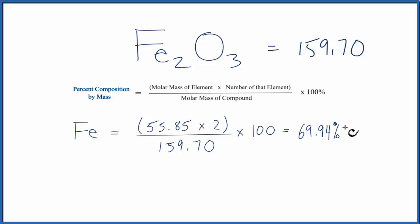To find the oxygen, we could subtract 100 minus this, and that would give us the percent of oxygen. Or we could calculate the same way. Let's do the calculation.